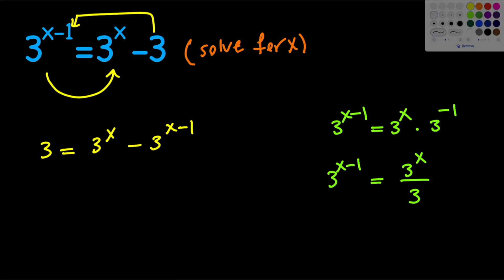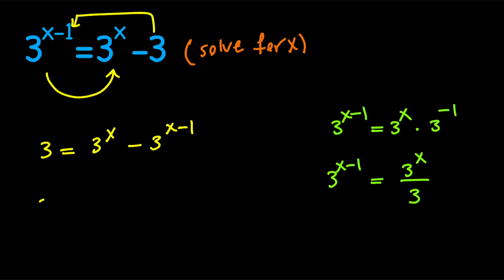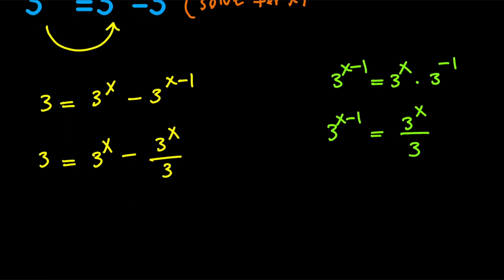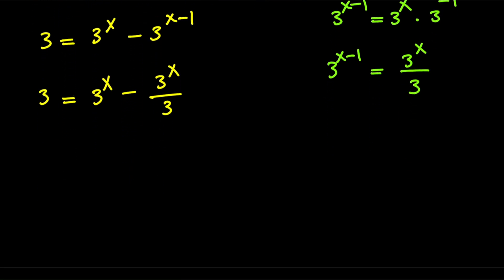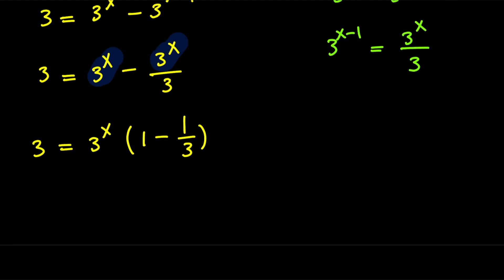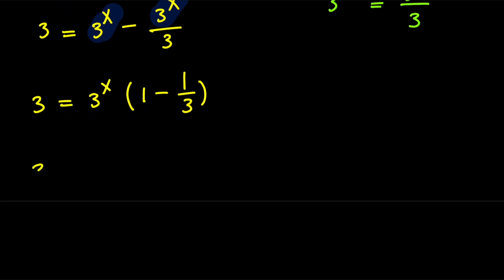Therefore, our equation is going to be 3 equals 3 to the power of x minus 3 to the power of x divided by 3. And now it is obvious that I can go ahead and factor out this 3 to the power of x. So once I do that, I'm going to have 3 equals 3 to the power of x times the quantity 1 minus 1 third. 1 minus 1 third is 2 thirds. Therefore, we have 3 equals 3 to the x times 2 thirds.